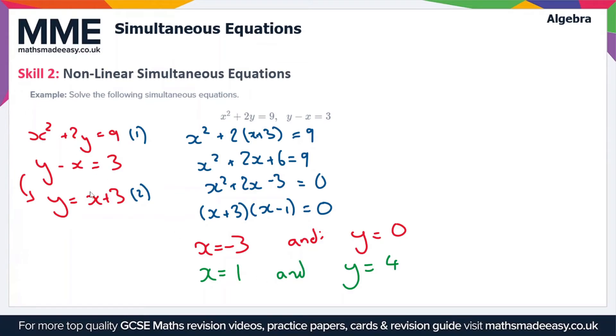So our two solutions to these equations are x = -3, y = 0, or x = 1, y = 4.